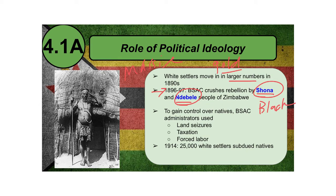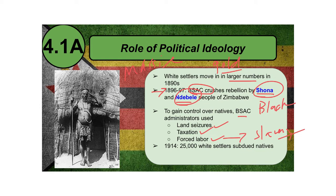In addition to crushing rebellions, to gain further control over natives, BSAC administration used the following tactics: land seizures — literally going into Ndebele or Shona tribal groups and seizing land without any payment — taxing people off their land, or rounding them up into forced labor. Yes, in the 1890s, forced labor was still a form of slavery, even though slavery was outlawed in Great Britain — BSAC was its own company. By 1914, 25,000 white settlers had subdued the natives in this region.